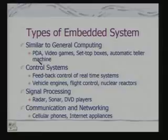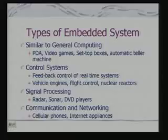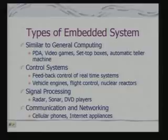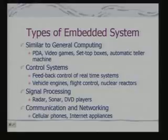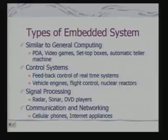On the other side, control systems have the basic job of sensing and actuating — feedback control of real-time systems where depending on external input, the control takes some actions. Examples are vehicle engines, fuel injection, flight control, and nuclear reactors. Next, we have signal processing systems where the core job is signal processing — MP3 players, DVD players, radar control systems, and sonar systems are all examples.